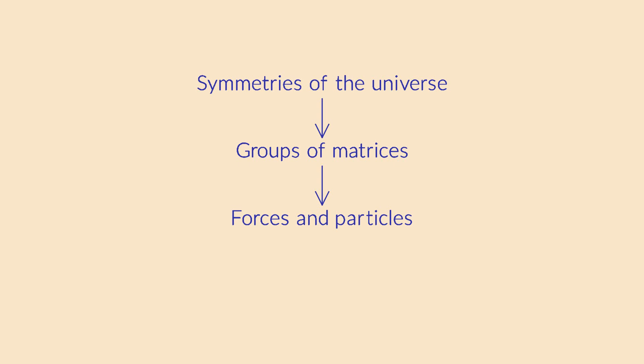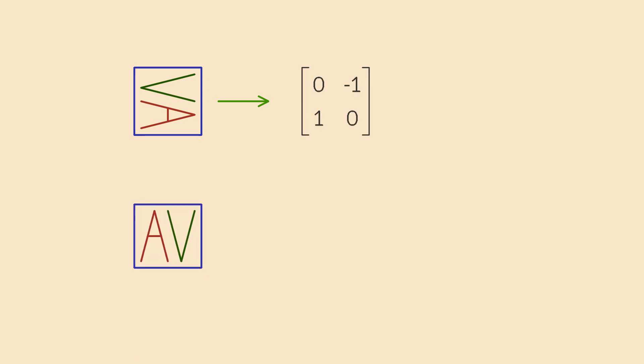But there is another deep connection. Many groups can be represented with matrices. For example, the symmetries of a square, which rotate or flip a square to itself, can be encoded as 2x2 matrices that transform the corner points of the square.